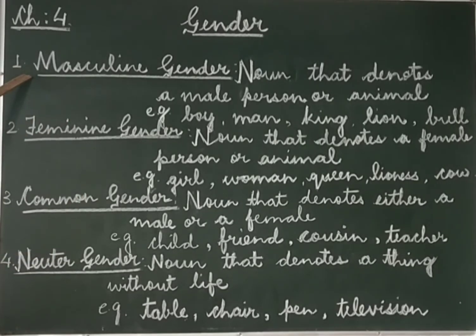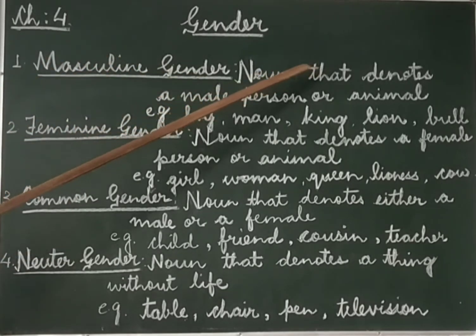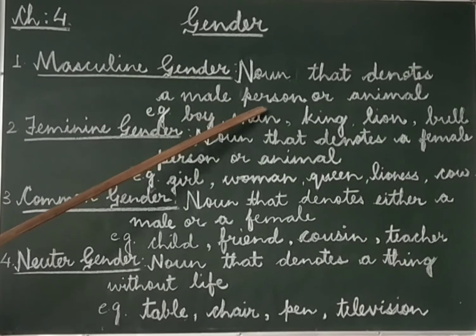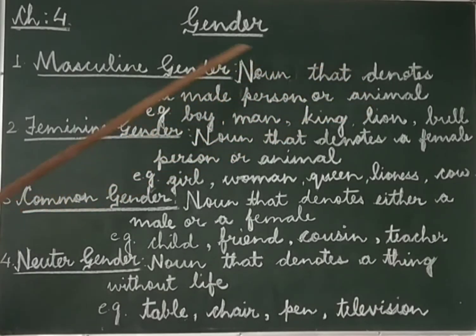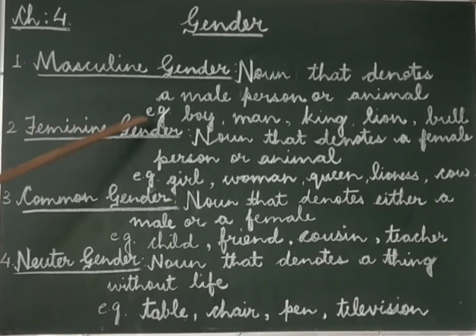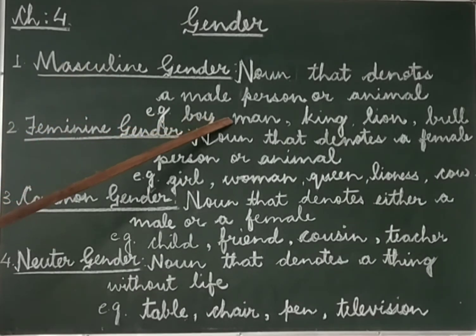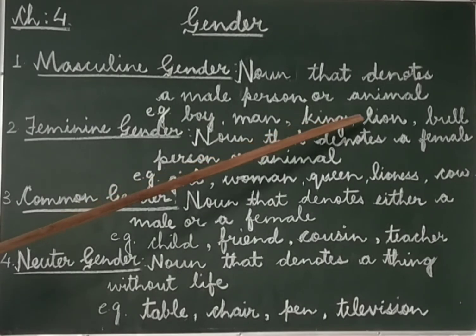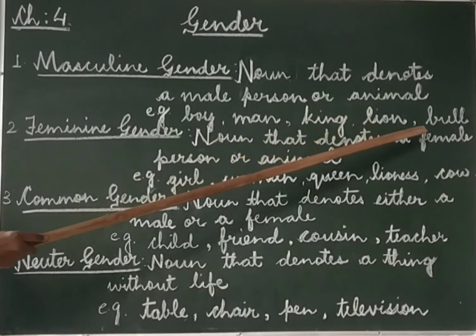Masculine gender. A noun that denotes a male person or animal is said to be masculine gender. For example: boy, man, king, lion, bull.